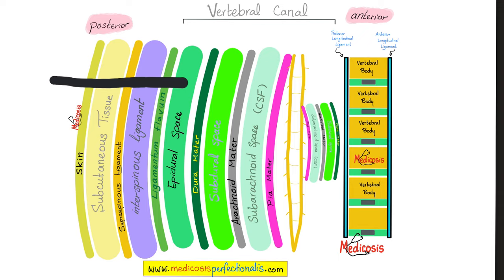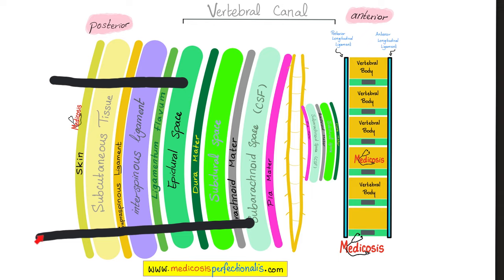Now for spinal anesthesia, we go deeper — into the subarachnoid space, which contains cerebrospinal fluid. You can detect CSF by letting the needle drip: saline injected was at room temperature, but CSF from the patient's body is warmer. Drop them on your forearm — cold means saline, warm means CSF. Congratulations, you've entered the subarachnoid space.